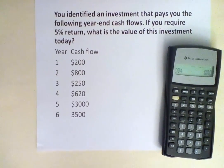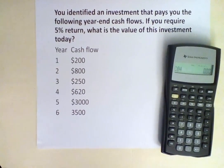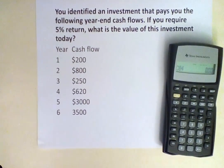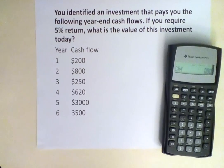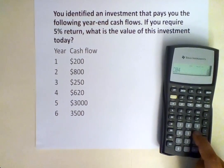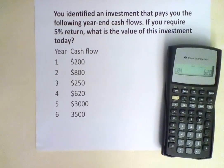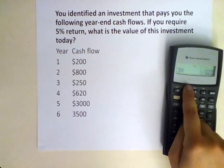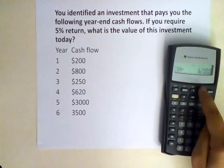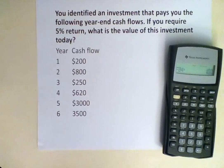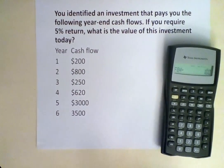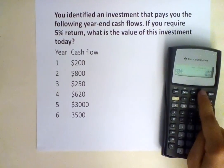Go down to C04 — it is $620, so we input $620. Hit enter. Down arrow — frequency of the payment is just one time, so we keep it at 1.